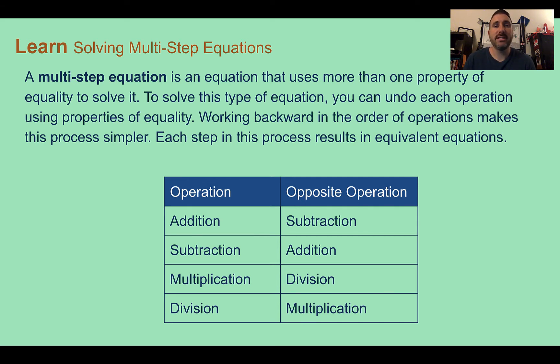If we see addition, we're going to do the opposite operation to undo it, which would be subtraction. If we see subtraction, we'd undo it with addition. If we see multiplication, we'd undo it with division, and division would be undone with multiplication.